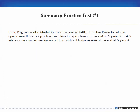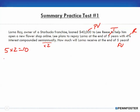Problem number one: Lorna Ray, owner of a Starbucks franchise, loaned $40,000 to Lee Reese to help him open a new flower shop online. Lee plans to repay Lorna at the end of five years with four percent interest compounded semi-annually — that's twice a year. How much will Lorna receive at the end of five years? That's a future value question. My present value is $40,000, the term is five years, and the rate is four percent.